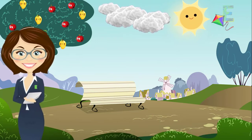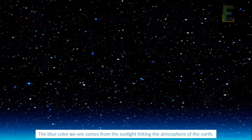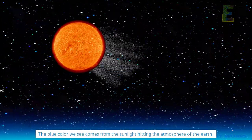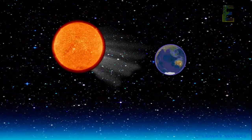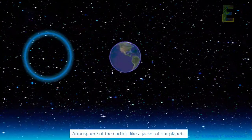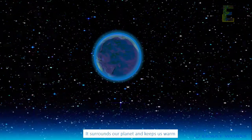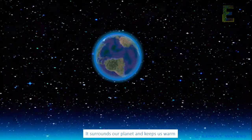The blue color we see comes from the sunlight hitting the atmosphere of the Earth. Atmosphere of the Earth is like a jacket of our planet. It surrounds our planet and keeps us warm.